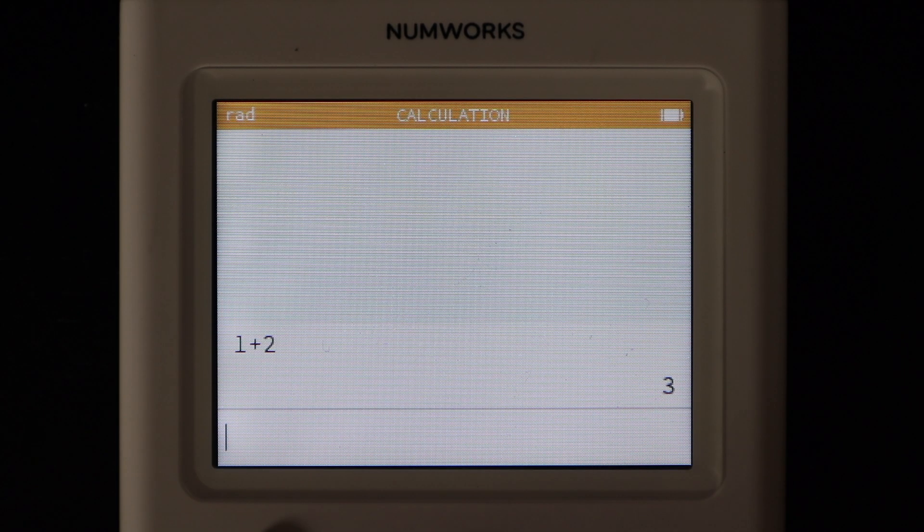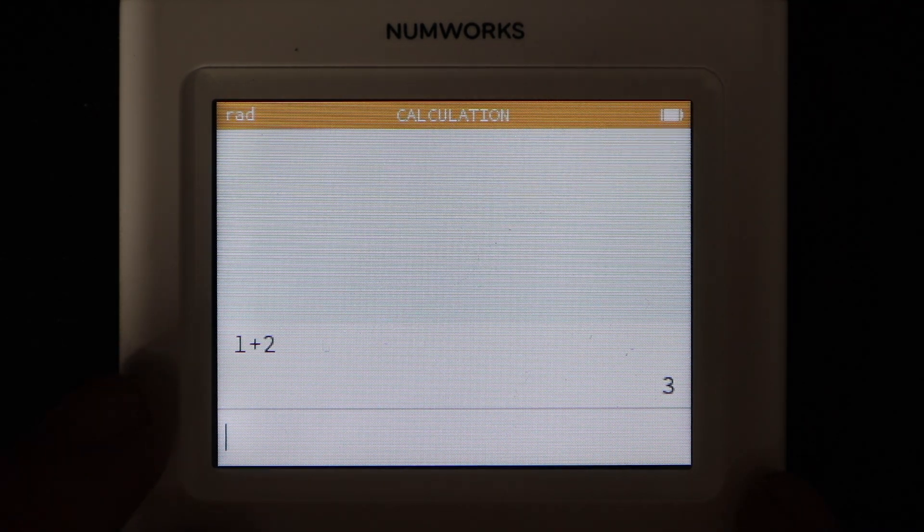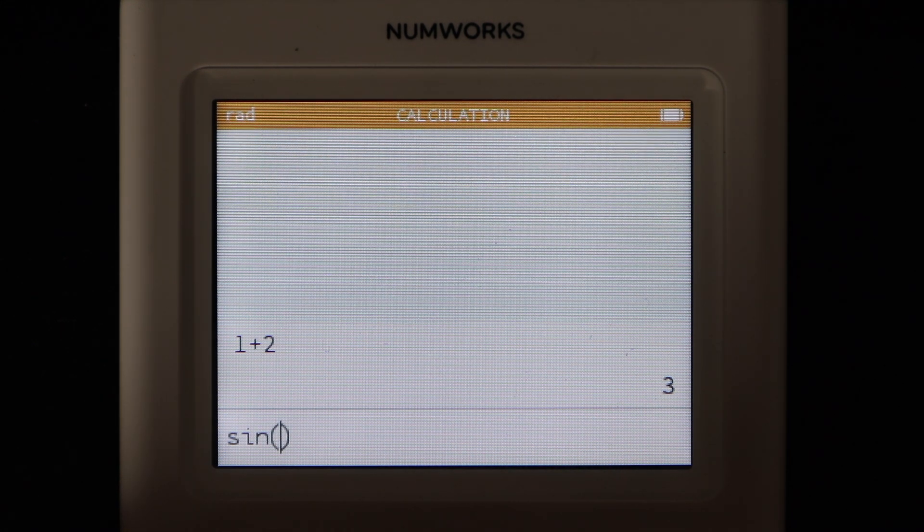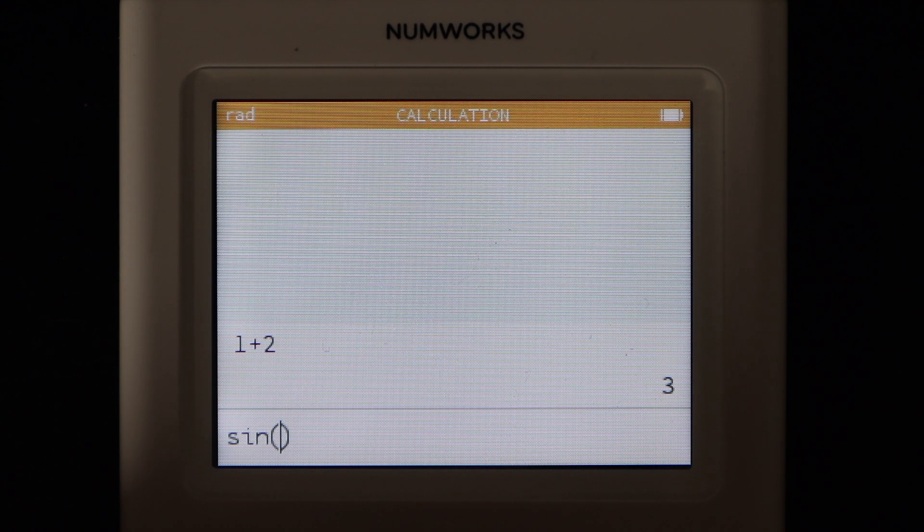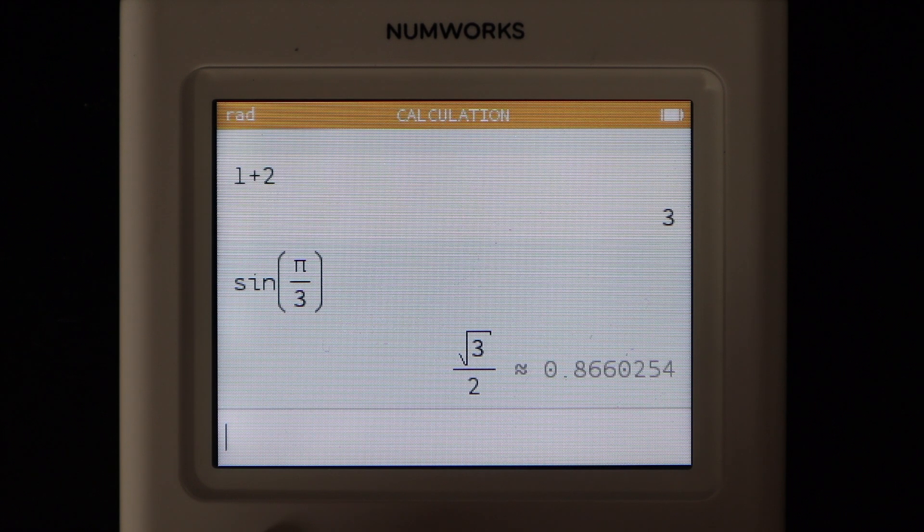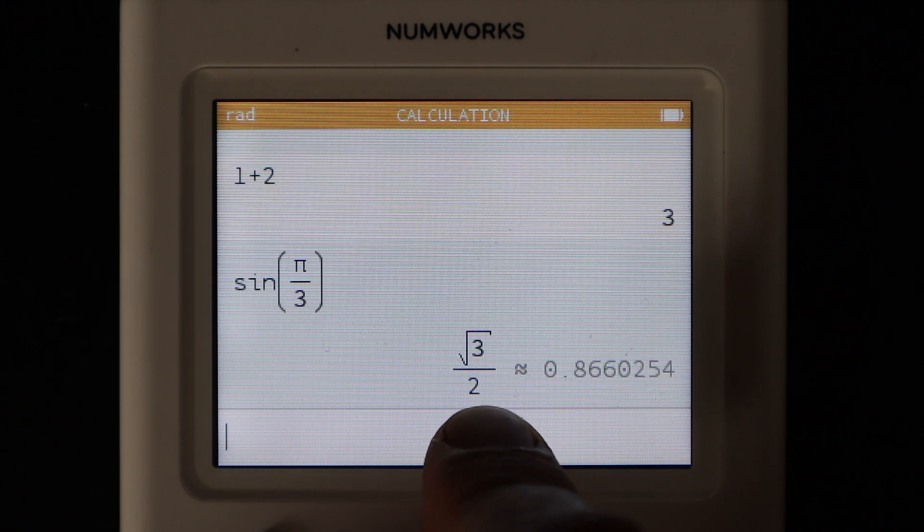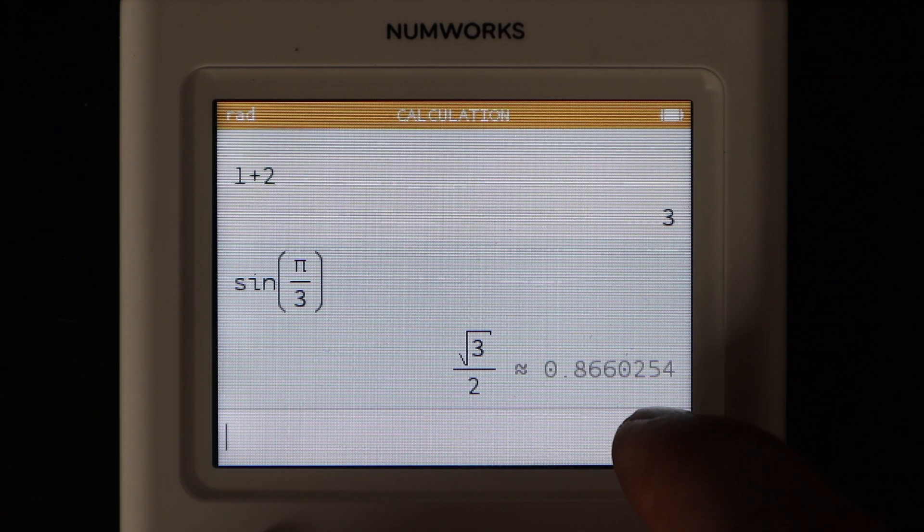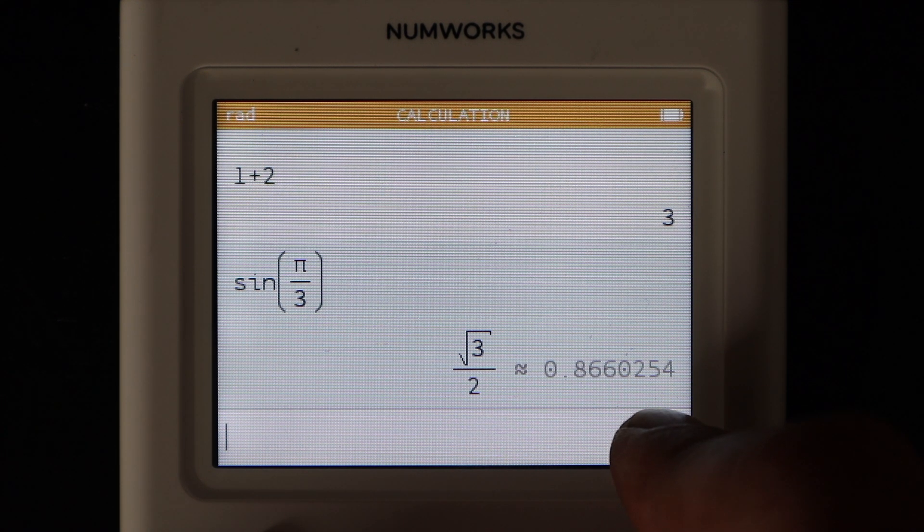There's no computer algebra system for the NumWorks calculator, but you will be getting all of your answers in exact simplified form. So even things like trig functions, if I do sine of pi over three here, you can see it gives me the exact answer of the square root of three over two, and then the decimal answer will always be given over to the right of that.